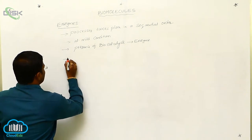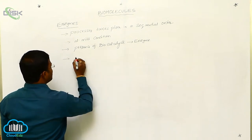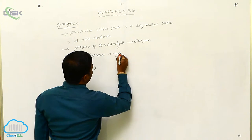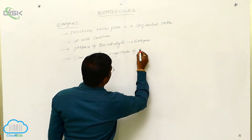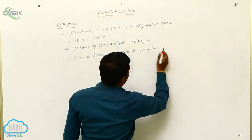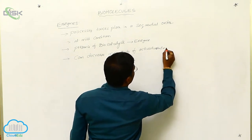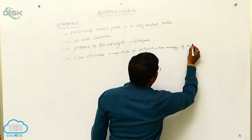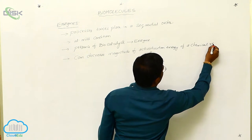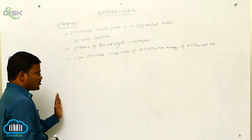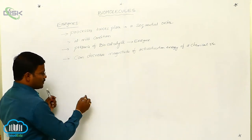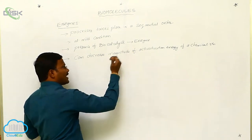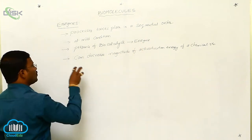What are these enzymes? What is the purpose of enzymes? Enzymes can decrease the magnitude of activation energy of a chemical reaction. During a chemical process, the substrate molecules are converted into product molecules, while the substrate has to cross one energy barrier. The magnitude of activation energy actually decreases in the presence of an enzyme. So this is the major role achieved by an enzyme.